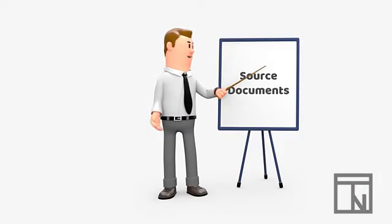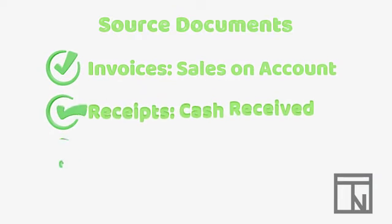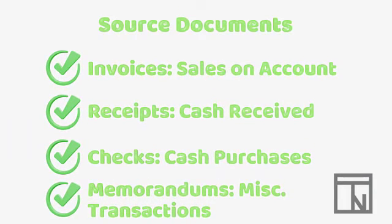Although there are many other types of source documents, we will just stick to these four main ones for right now. Remember that invoices are used as source documents for sales on account, receipts are used for cash received typically from customers, checks are used for cash purchases, and memorandums, or memos, are used for transactions that don't otherwise have a source document.